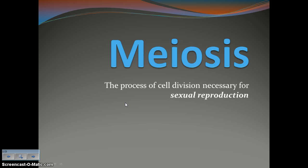We spent a lot of time in class talking about mitosis. Now we're going to move on to a process called meiosis. Meiosis is the process of cell division that's necessary for sexual reproduction. In order for organisms to reproduce sexually, they have to utilize this process of meiosis. Well, let's talk about why.